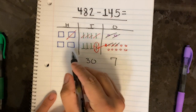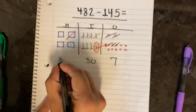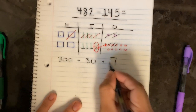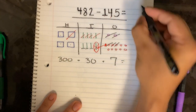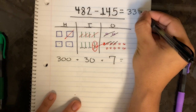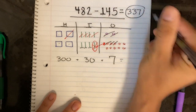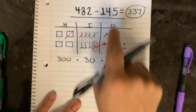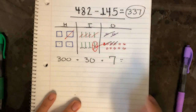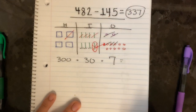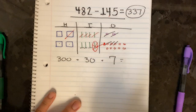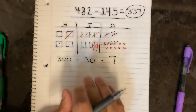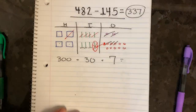And how many hundreds we have left over: 1, 2, 3 — three hundreds. So our answer is 337. 482 subtracted by 145 is 337. That is how you subtract using the place value strategy — I hope it works out for you, let me know how it goes!